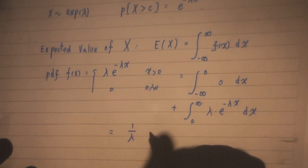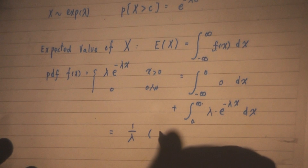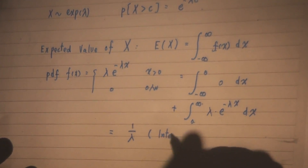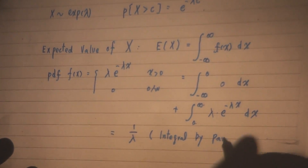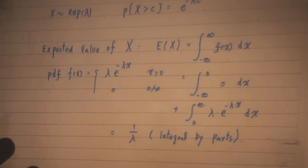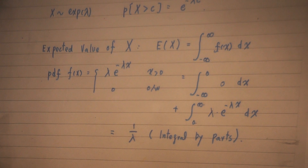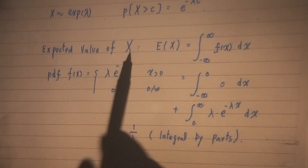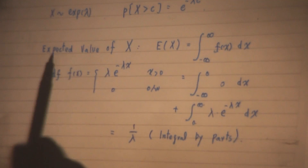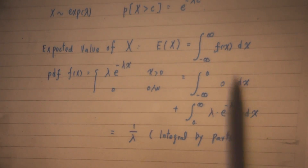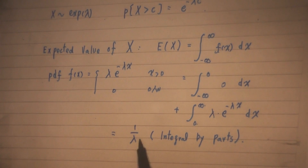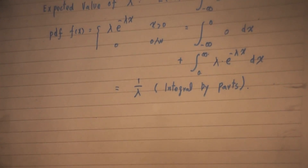In calculus, what you need to do is use integration by parts — this is where you find it. So you need to also memorize this: the expected value of an exponential random variable is 1 over lambda.